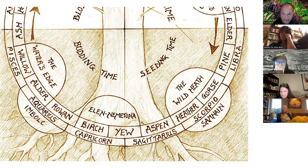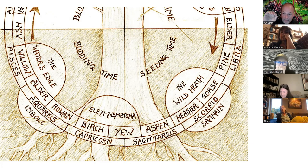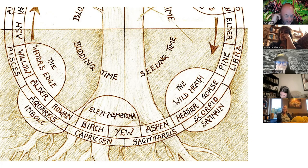After rebirth at the yew tree, a brand new Ogham cycle begins with the birch tree and rising energy. Right now we're about to plunge down into the wild hunt, galloping across the wild heath of gorse and heather to the aspen trees and the yew tree.